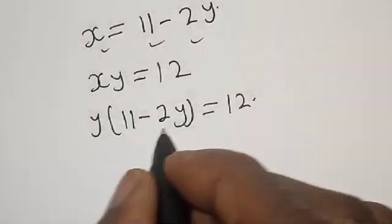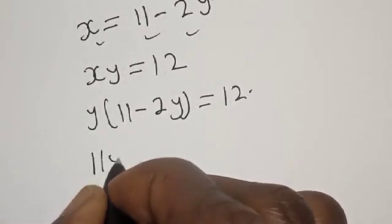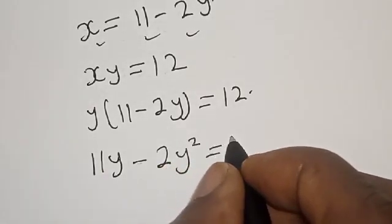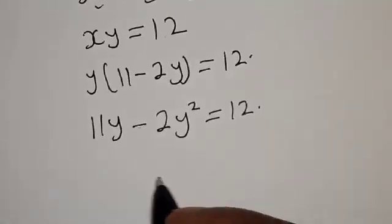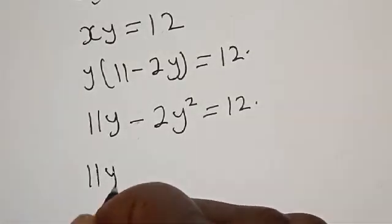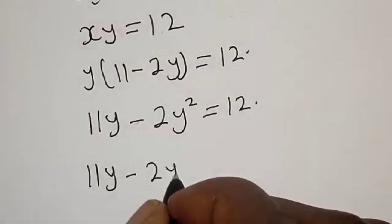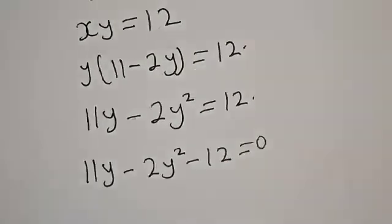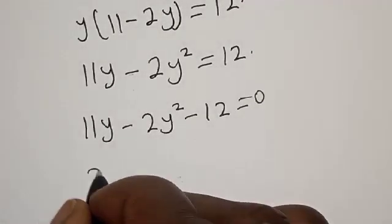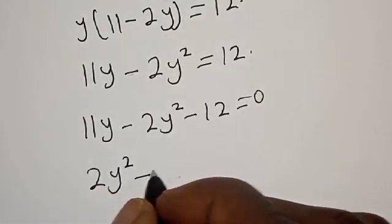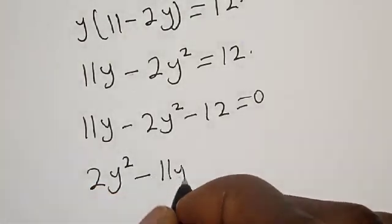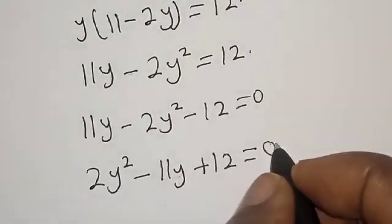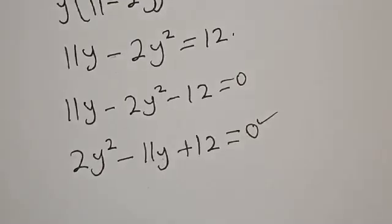Now let's open the bracket. We have 11y minus 2y squared is equal to 12. Then we have 11y minus 2y squared minus 12 is equal to 0. Now let's rearrange. We have 2y squared minus 11y plus 12 is equal to 0. This is a quadratic equation.